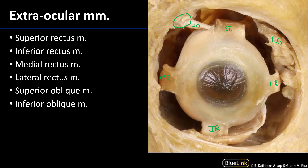Turning our attention back to the superior oblique muscle, that muscle belly is really traversing the length of the orbit — we can actually see it there. Its tendon goes through the trochlea before inserting on the sclera just proximal to the superior rectus muscle. Then we can see the inferior oblique muscle here, which originates from the maxillary plate and goes up to insert laterally on the sclera of the eye.